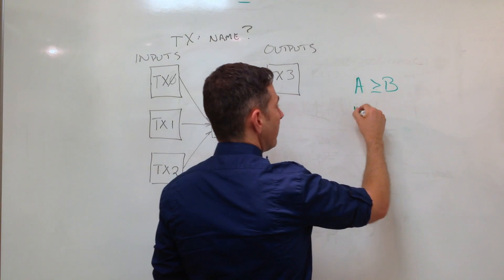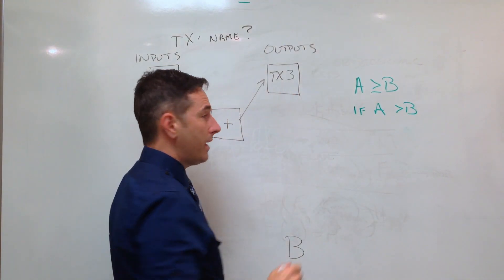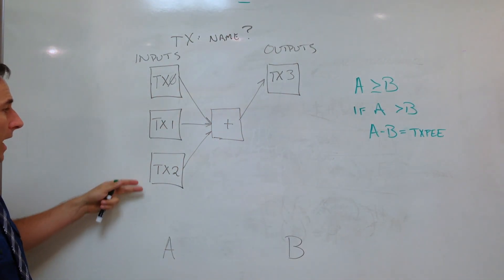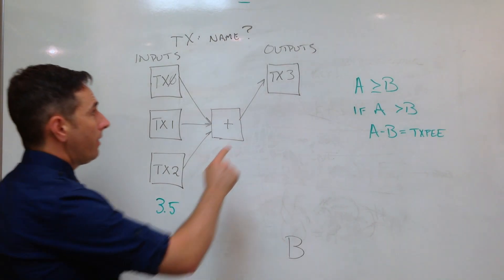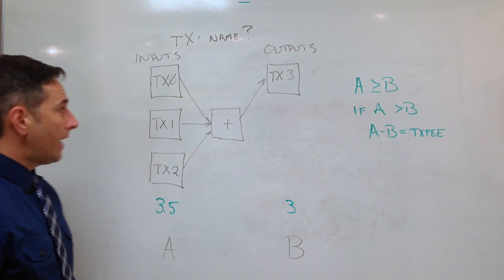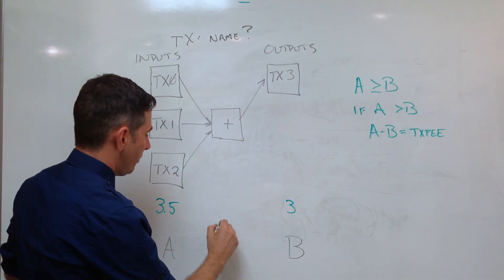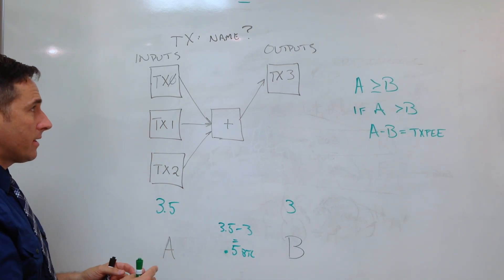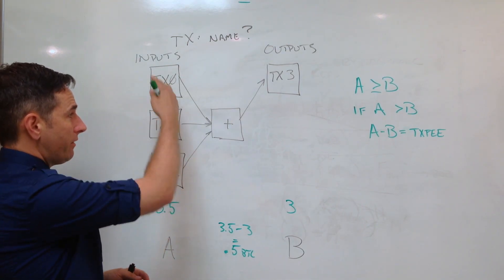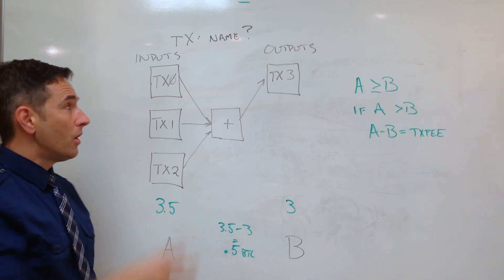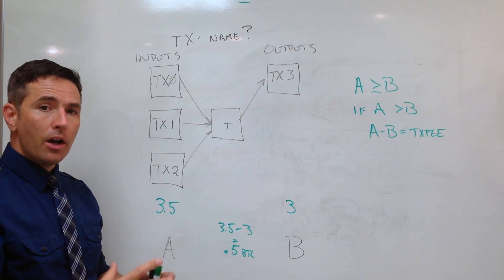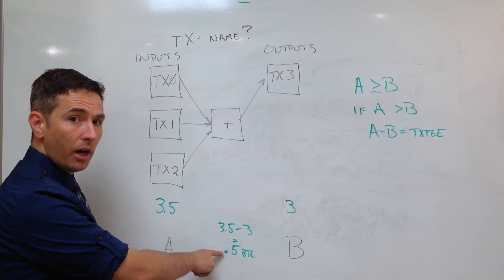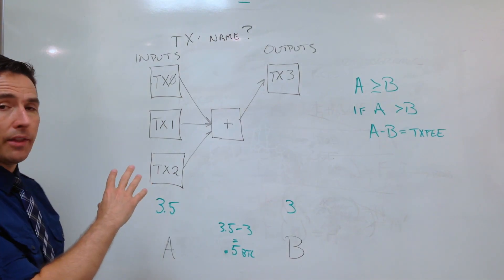If A is greater than B, the difference between A and B equals the transaction fee. For example, if the inputs add up to 3.5 Bitcoin and the designated output is 3 Bitcoin, then the transaction fee is 3.5 minus 3, or 0.5 Bitcoin. Any Bitcoin not explicitly accounted for in the movement from inputs to outputs is assigned as a transaction fee. Whoever successfully mines the block gets not only the mining reward but also the rights to collect all transaction fees left over in those transactions.